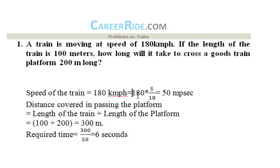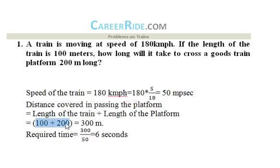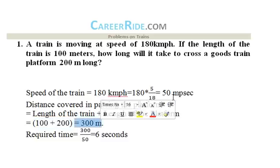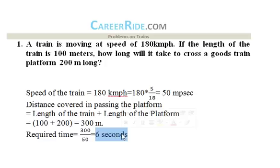To convert kilometers per hour to meters per second, multiply by 5/18. For the vice versa, multiply by 18/5. So 180 × 5/18 equals 50 meters per second. The distance covered in passing the platform is the length of the train plus the length of the platform — that is 100 plus 200 equals 300 meters. Dividing 300 by 50 gives 6 seconds as the total time taken to cross the platform.